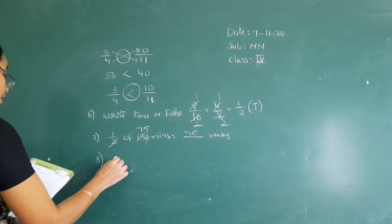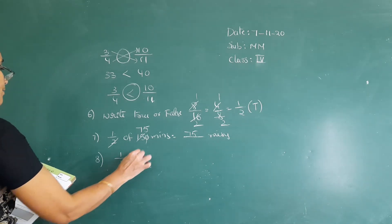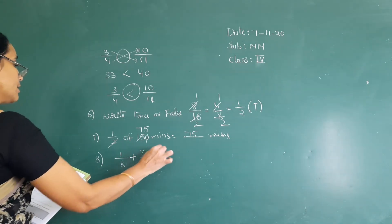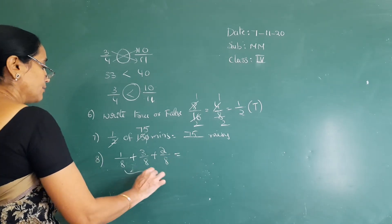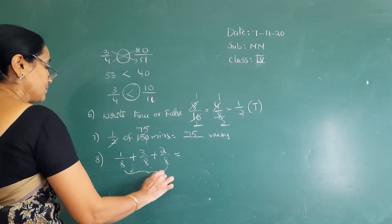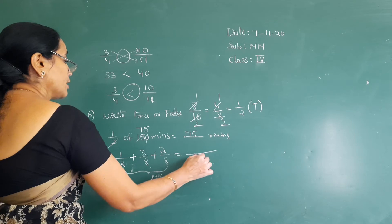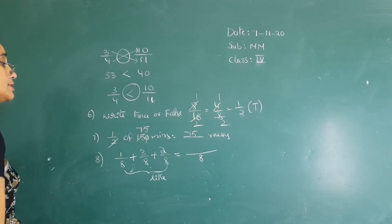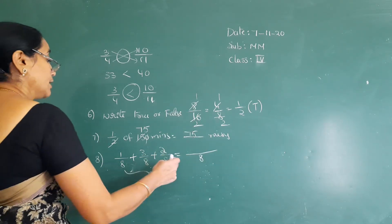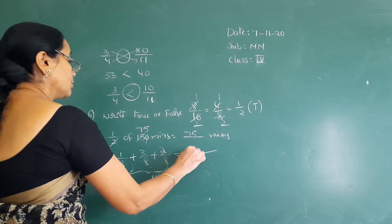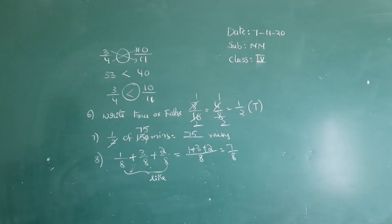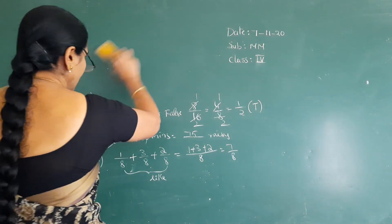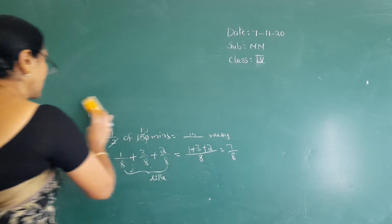See the eighth question: 1 by 8 plus 3 by 8 plus 2 by 8. These are all like fractions — like fractions means the denominators are the same. When denominators are the same, we write the common denominator and add the numerators: 1 plus 3 plus 2 equals 6, so the answer is 6 by 8, which simplifies. Then 7 by 8. In like fractions, write the common denominator and add the numerators.